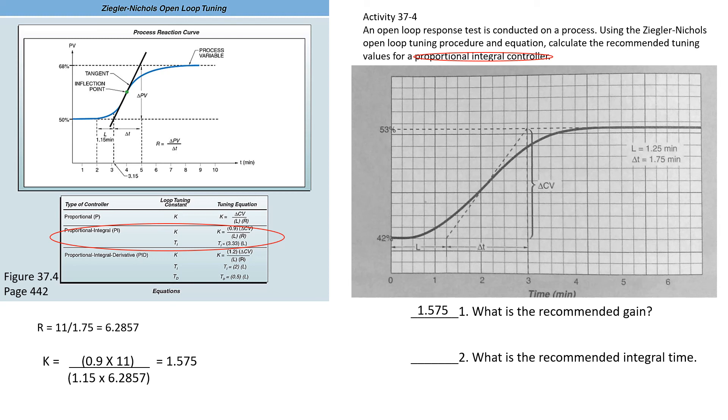Recommended integral time is very simple: 3.33 times L. Again, L is given to us—it's the time from when we made the process change, time zero, until the slope of this line crossed over our initial starting point, which is right here. That gave us a value of 1.25 minutes. We just take the 3.33 times the 1.25 to give us an answer of 4.16 for that one.